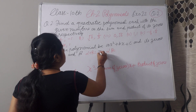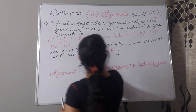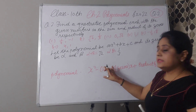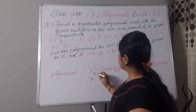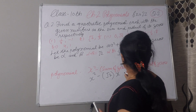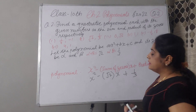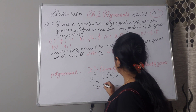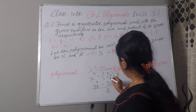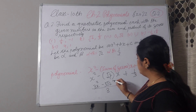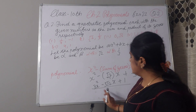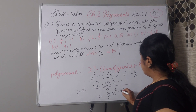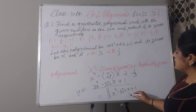Next part. Here, the sum of zeroes is root 2 and the product of zeroes is 1/3. Our polynomial is Ax² + Bx + C. The polynomial will be x² minus (sum of zeroes) times x plus (product of zeroes), so x² minus root 2 times x plus 1/3. Taking LCM as 3, it becomes 3x² minus 3 root 2x plus 1. This 3 is the value of k, so our polynomial is 3x² minus 3 root 2x plus 1.